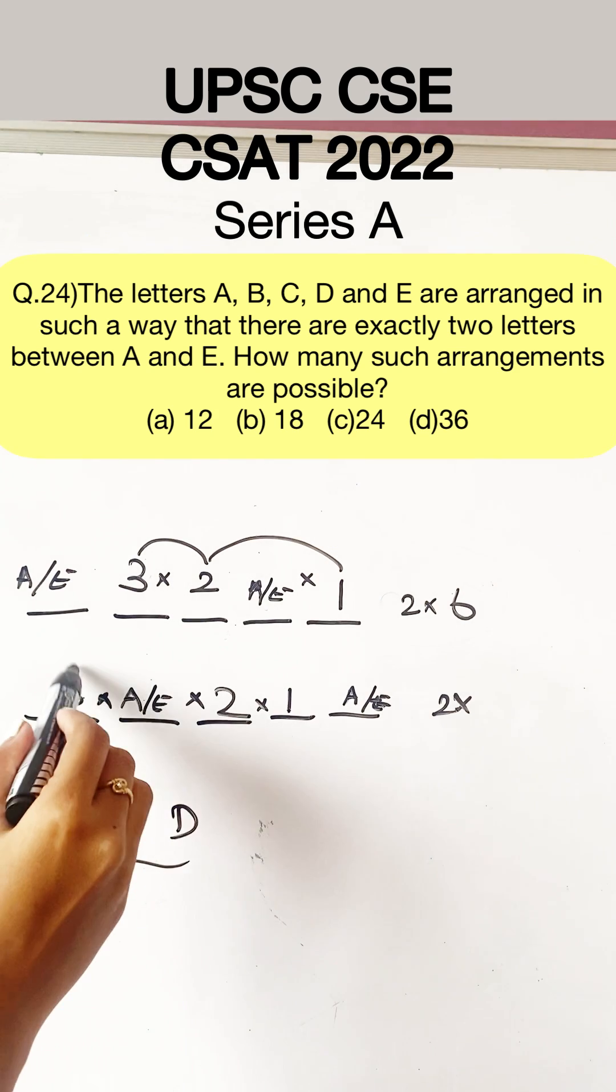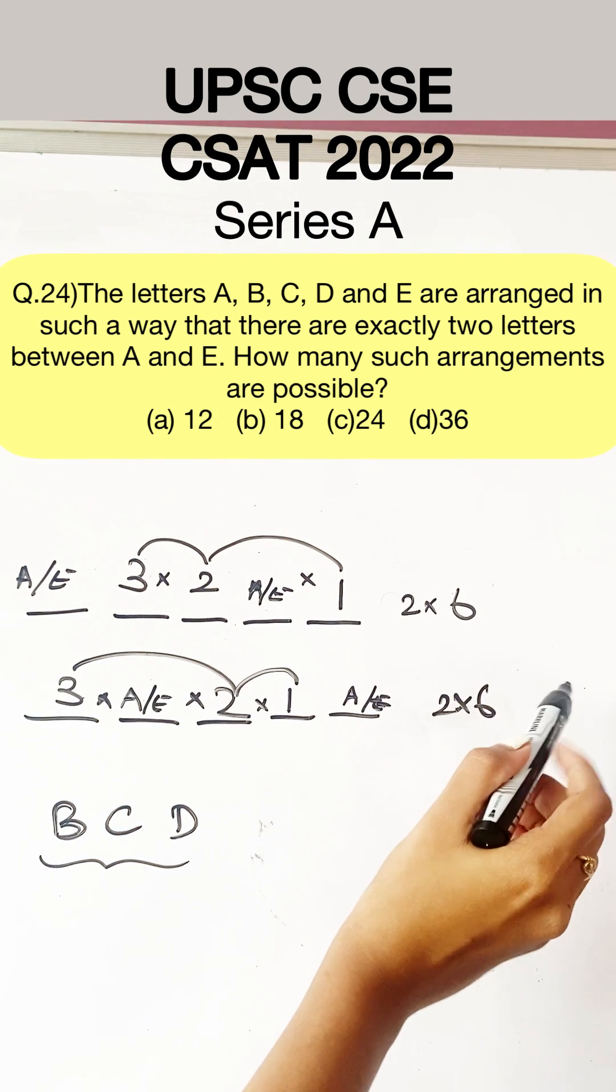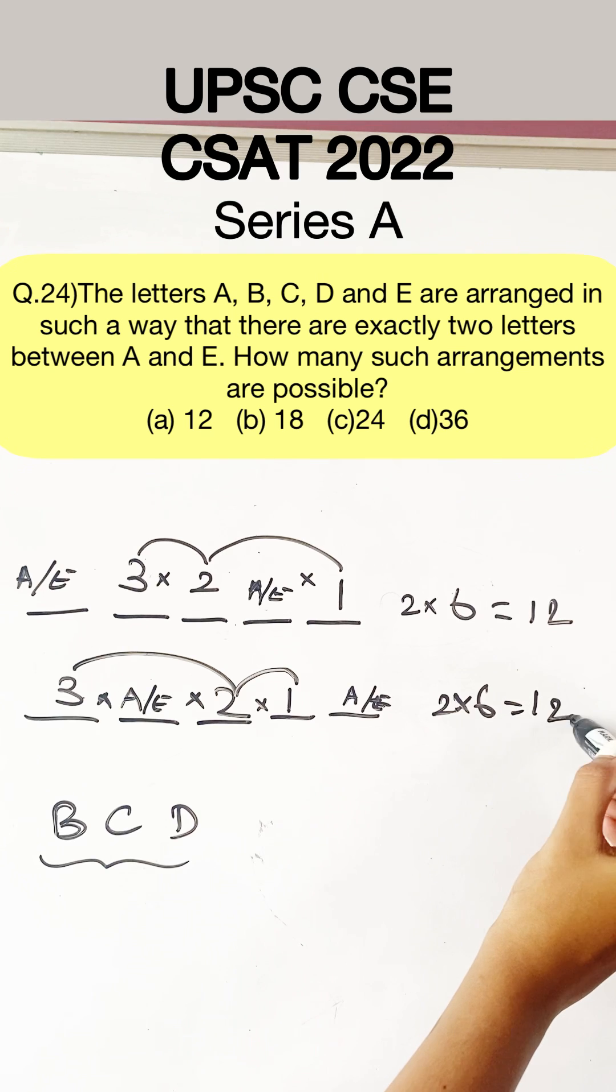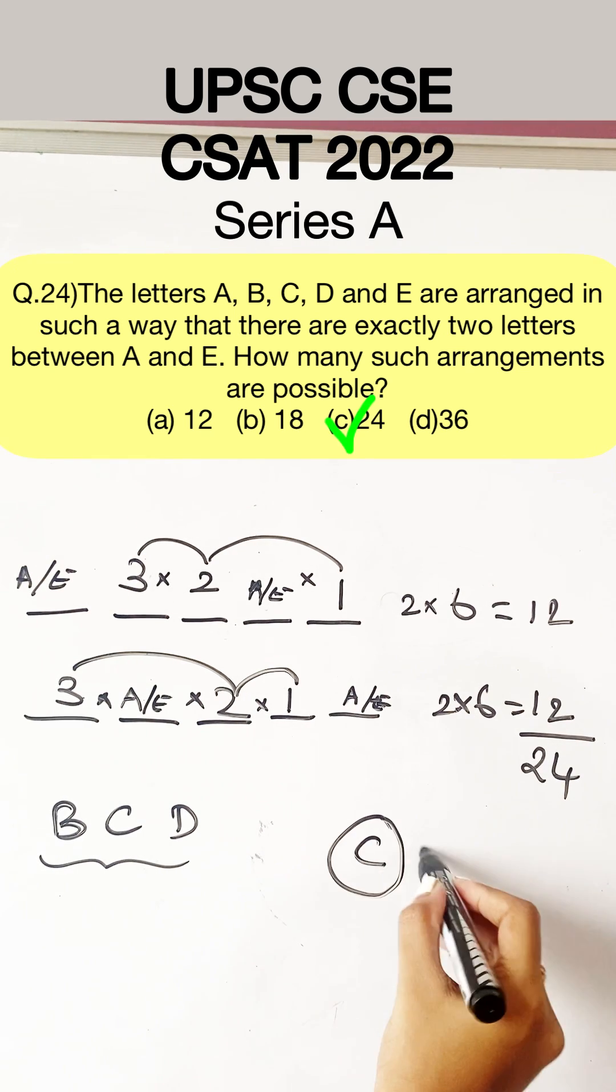Multiply them all. It will become three into two into one which is six. Now we have a total of twelve here and twelve here. So it's a total of twenty-four possibilities. So option C is the answer.